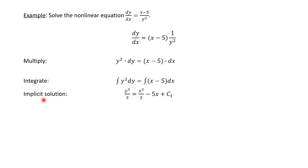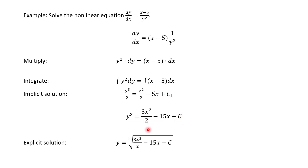We can leave the answer as the implicit solution, but let's go ahead and get our explicit solution. If we multiply both sides by 3, that gives us a new constant c1, but it's still a constant, so we just call it c. Then if we cube root both sides, our explicit solution to this separable differential equation is y equals the cubed root of that quantity. A quick note: you can always check your work by differentiating your explicit solution and seeing if you can get back to where you started.